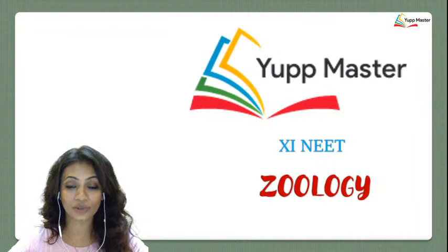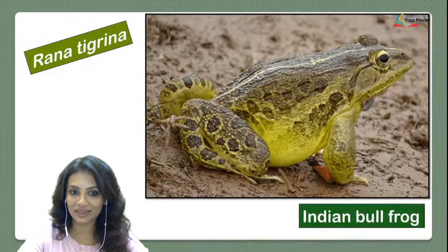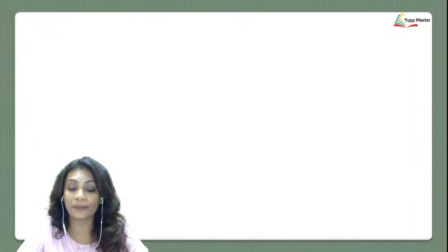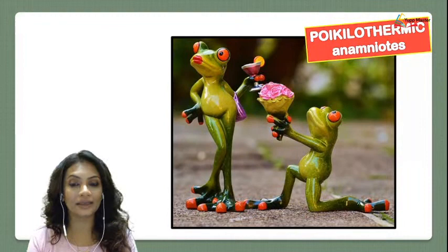Many state textbooks don't include frog and earthworm in their portion, but it is included as part of your NEET, so we will do it together. Today is the first session on the frog. The most common frog studied in India is called Rana tigrina, commonly known as the Indian bullfrog. Frogs are poikilothermic, meaning they are cold-blooded animals. They are also anamniots, meaning they don't have an amniotic membrane around them during development.